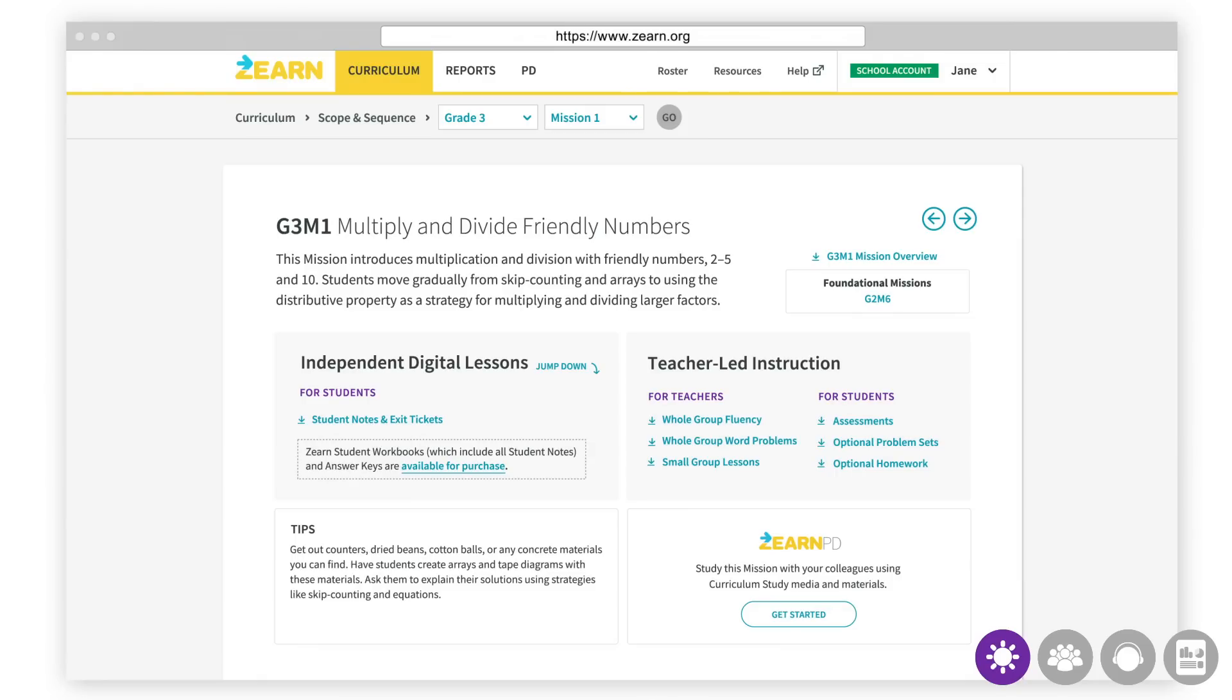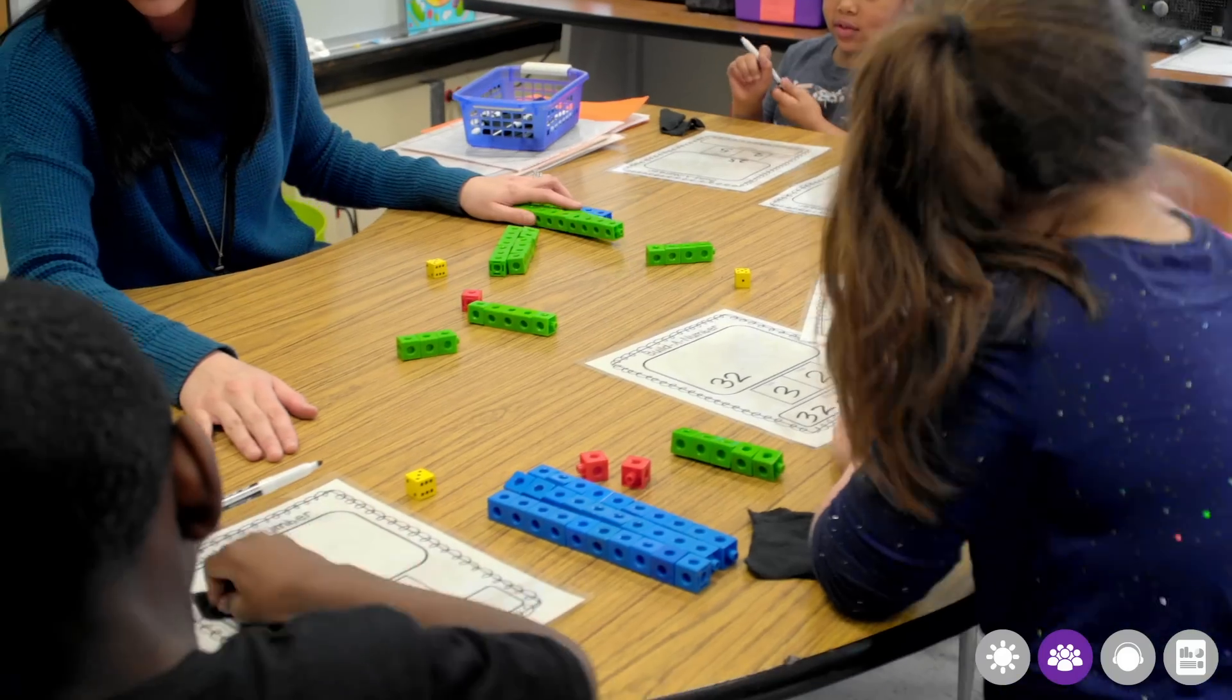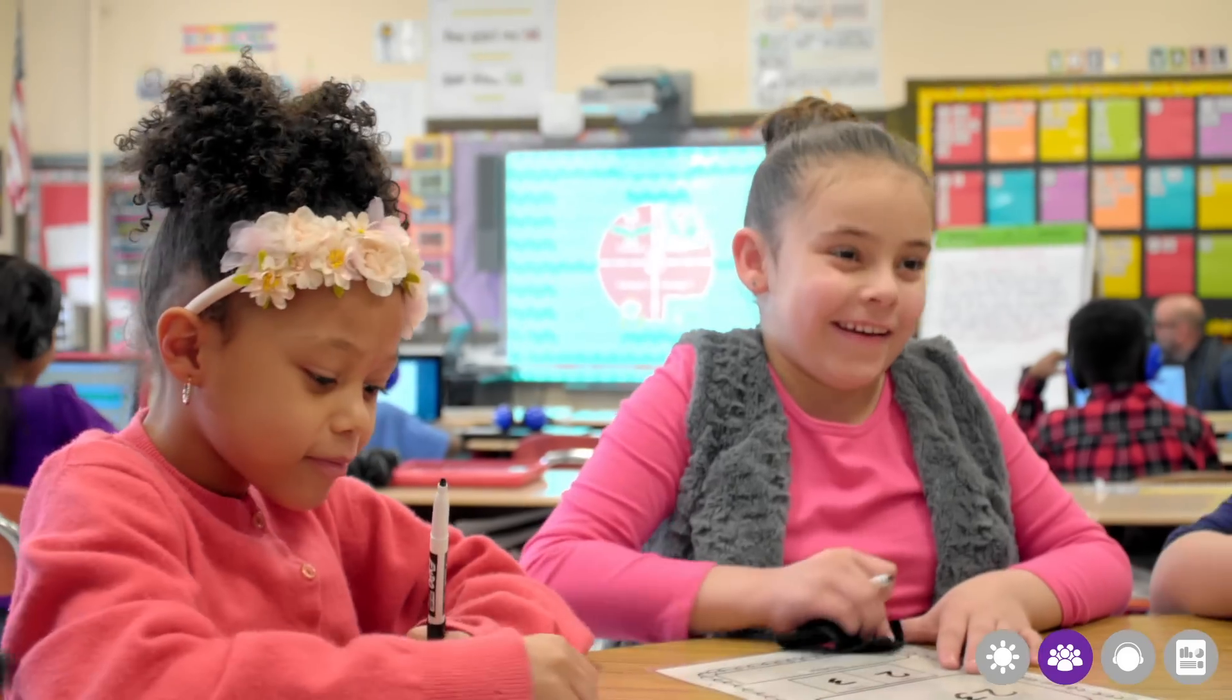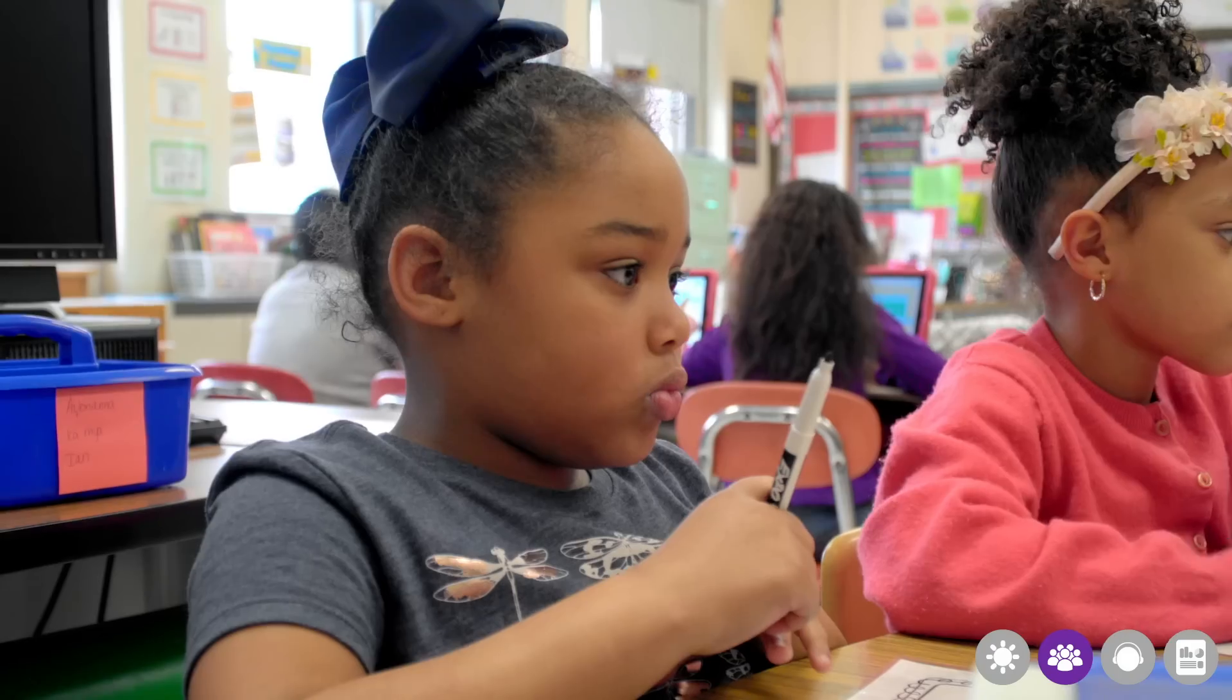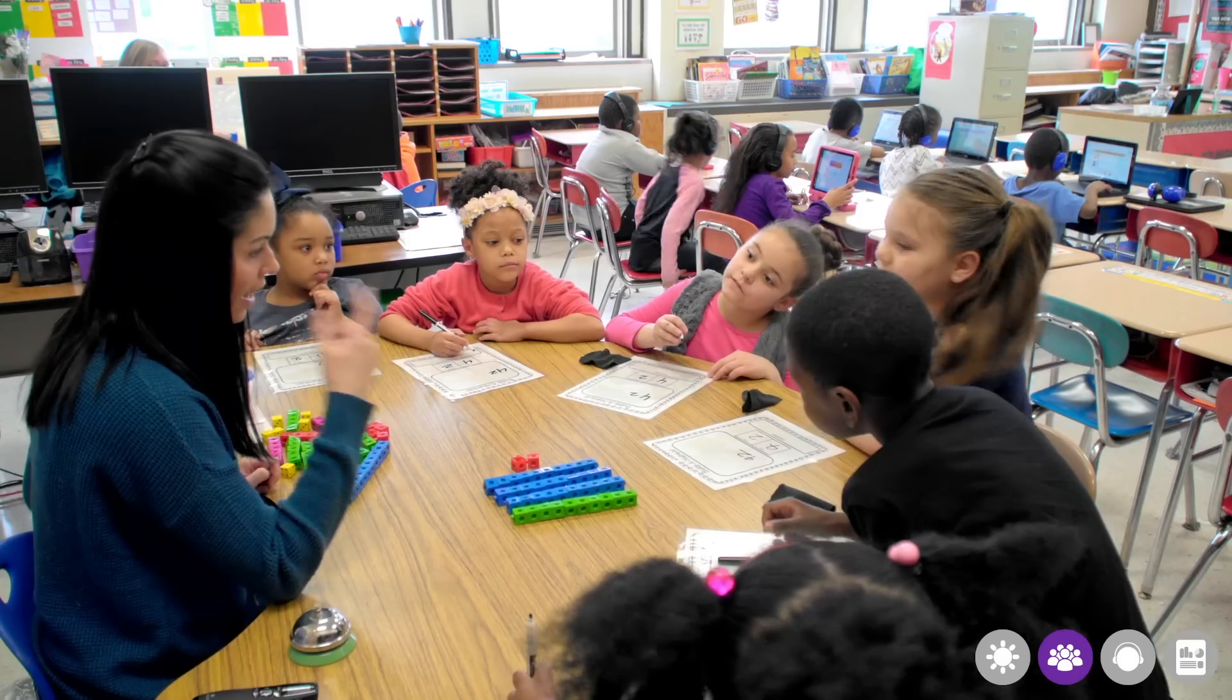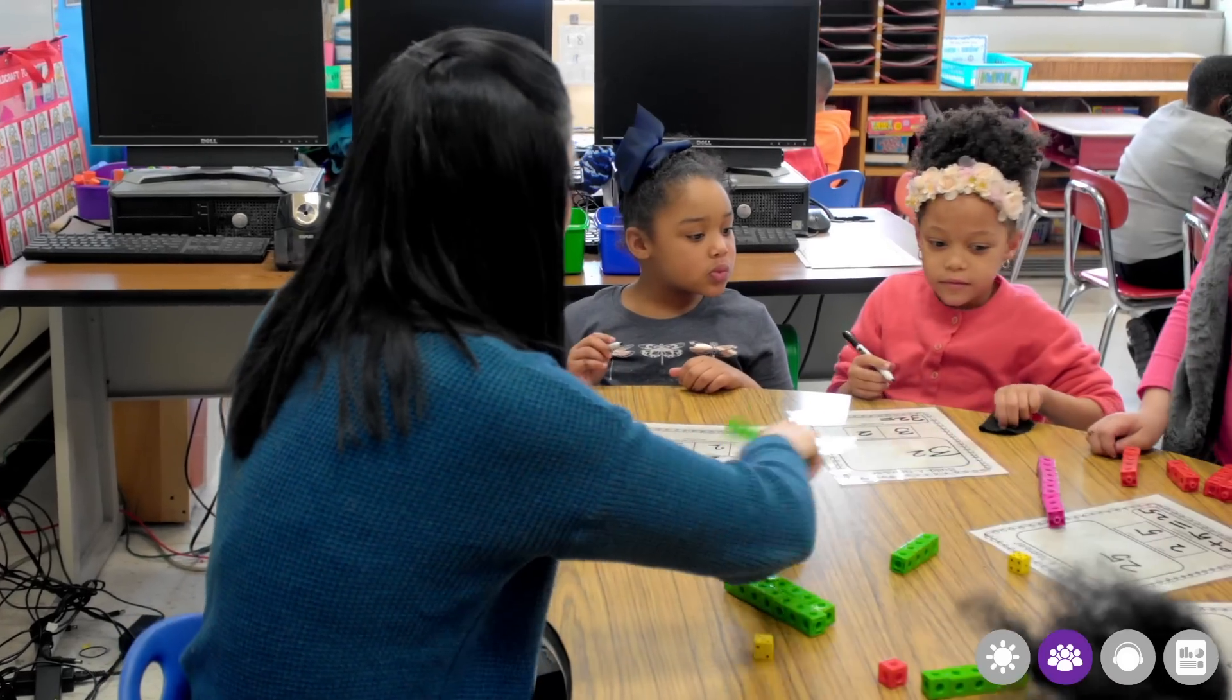After whole group fluency and word problems, students break into two groups to learn new content. While half the class learns independently with digital lessons, the other half learns with their teacher in a small group. During daily small group lessons, teachers facilitate rich math discussions between students, shifting the classroom math dialogue from answer getting to a participatory conversation. Students collaborate with peers using a variety of problem-solving and communication approaches and share their thinking aloud. Students bring different strategies to the table, creating new learning possibilities for all members of the classroom community.